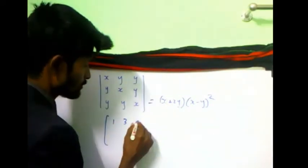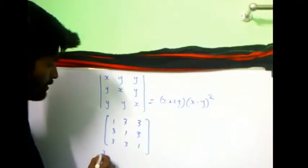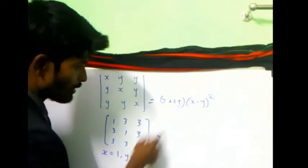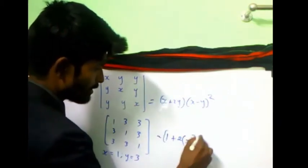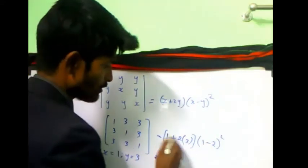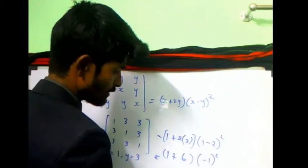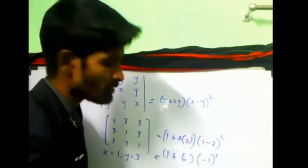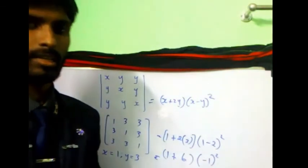x minus y, and two elements are there, so square. Now let's try this with a problem. I'll go with 1, 3, 3; 3, 1, 3; 3, 3, 1. Here x equals 1 and y equals 3. Apply this in the formula: (1 + 2×3)(1 - 3)². This equals (1 + 6)(-2)². That's 7 times 4, which equals 28... wait, no.